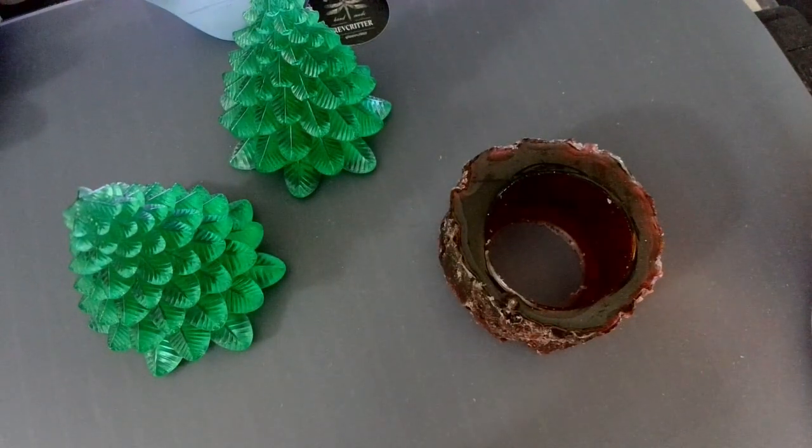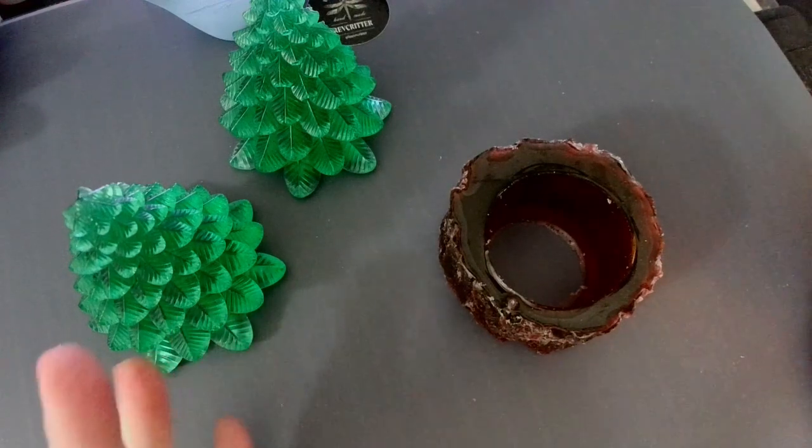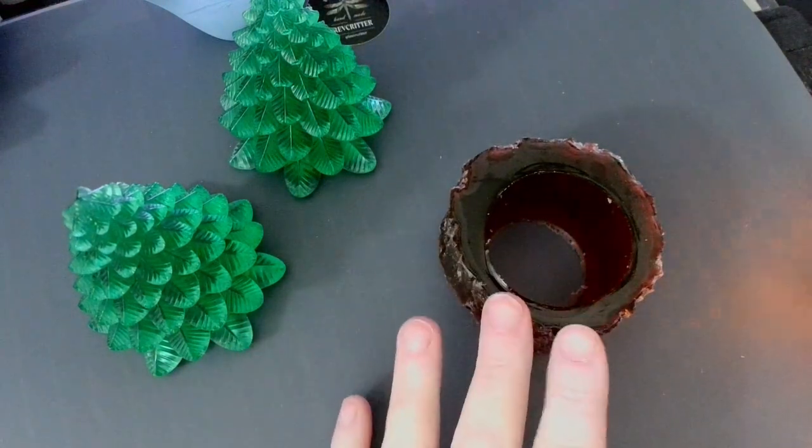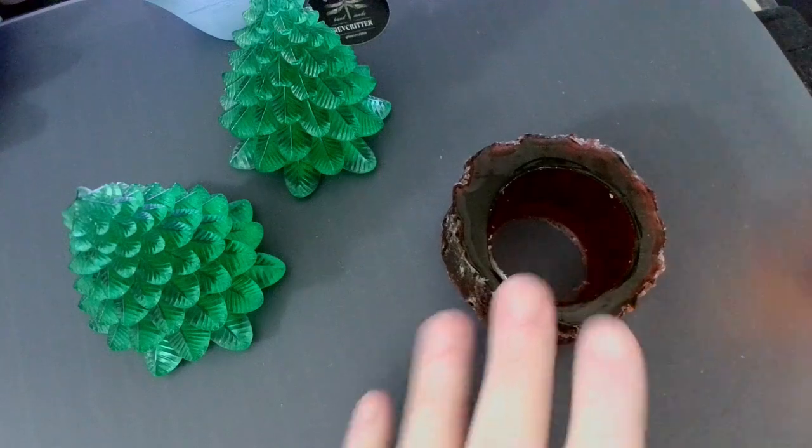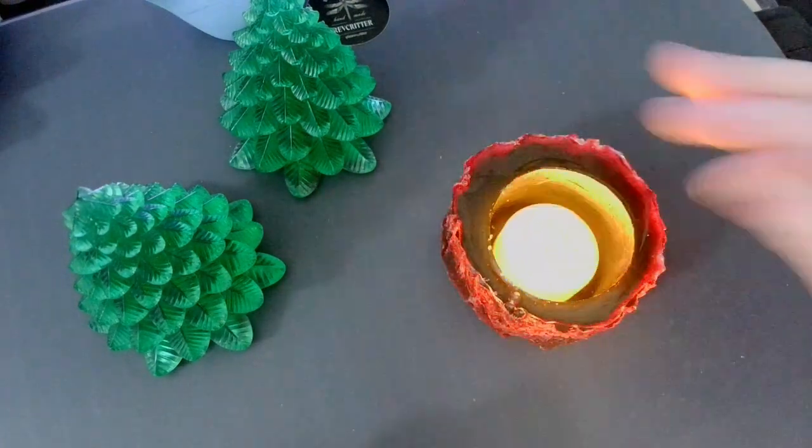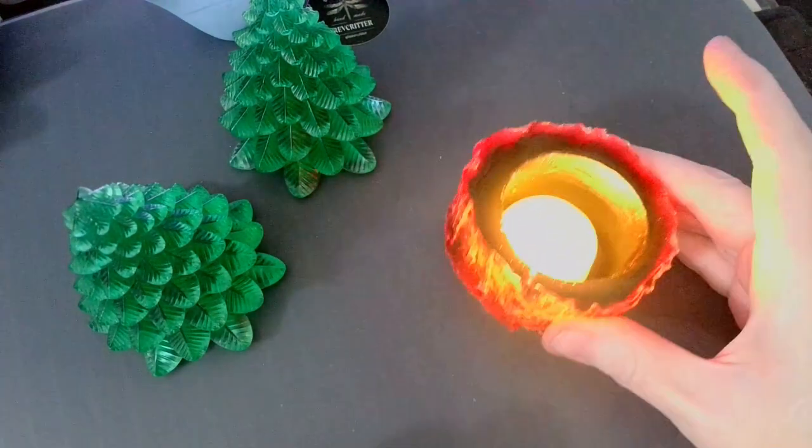Resin will get very hot. It will start to melt and it could possibly burn. So if you're going to use resin to make tea light holders, please use LED candles. And look at that beautiful glow.